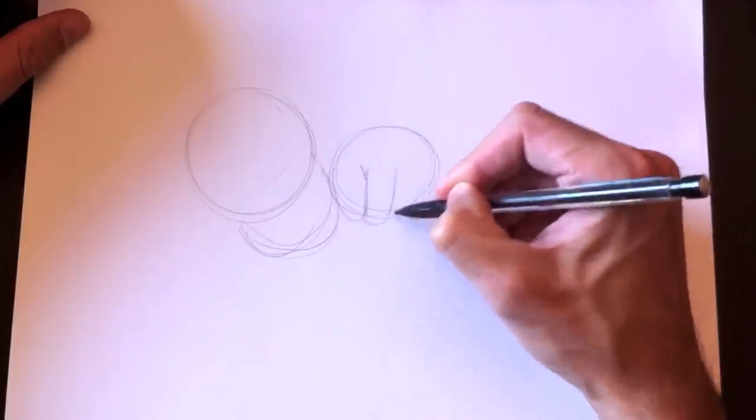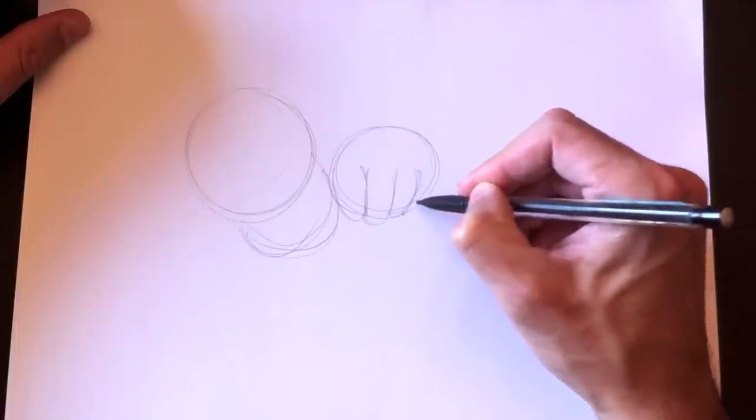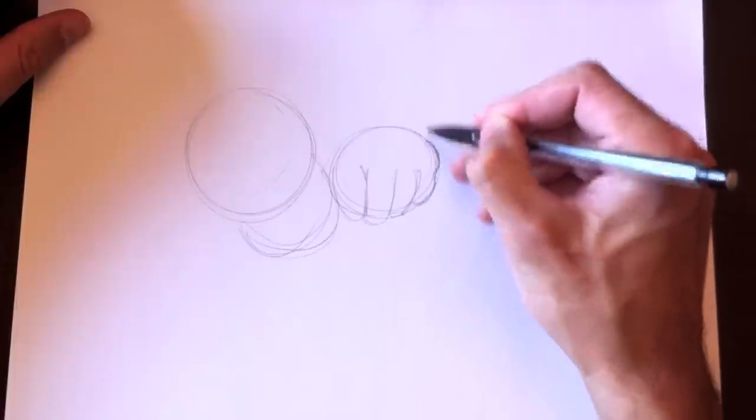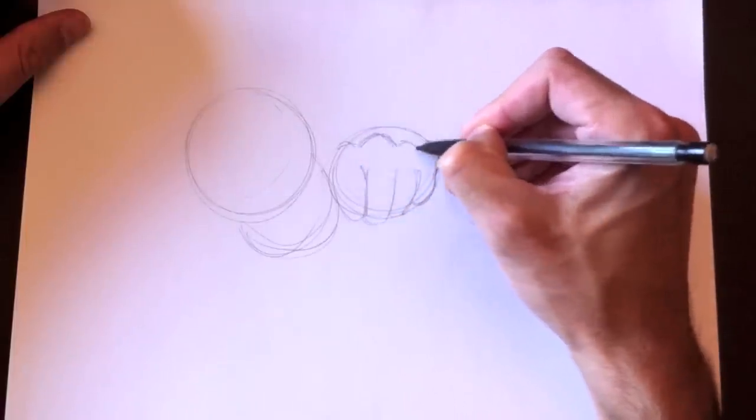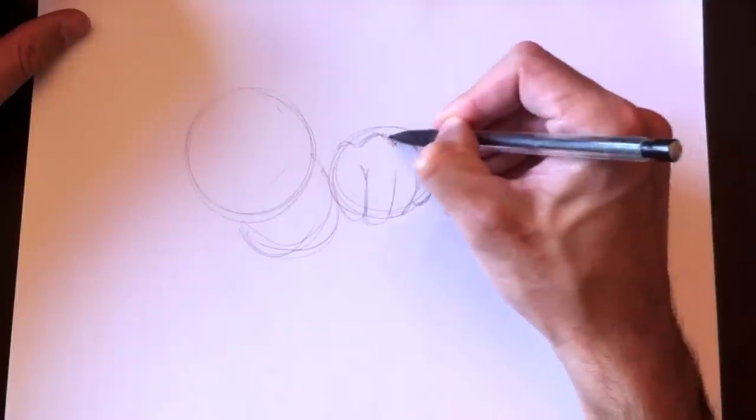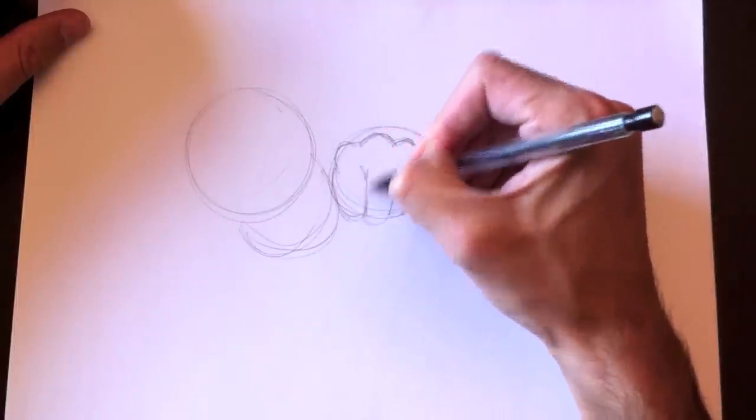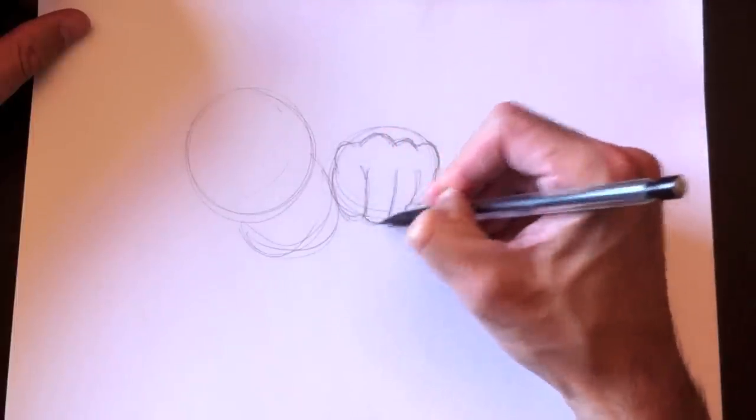We have his head, his body, and here's his fist. He'll be flying towards us essentially. So here's his fingers and his joints, and he'll be in full flight toward us in this drawing.